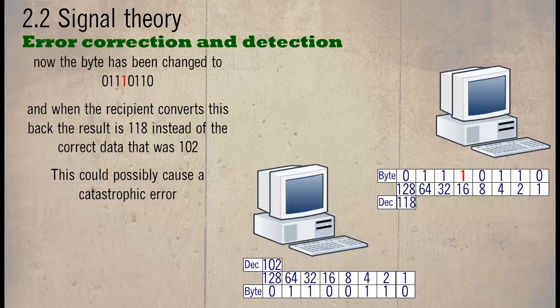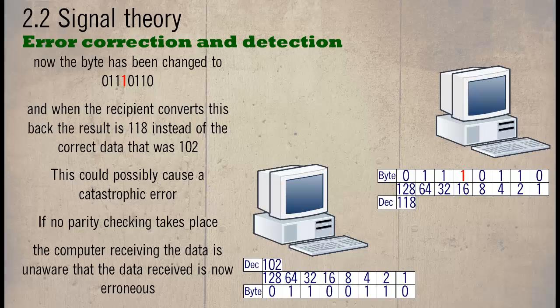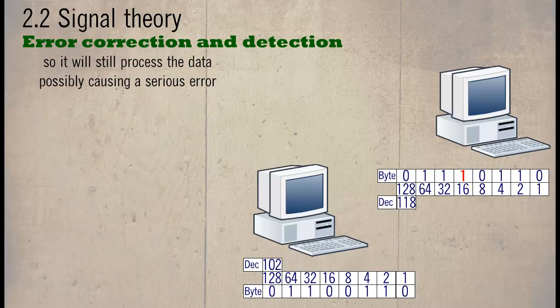This could possibly cause a catastrophic error. If no parity checking takes place, the computer receiving the data isn't aware that the data received is now errorless. So it will still process the data, possibly causing a serious error.